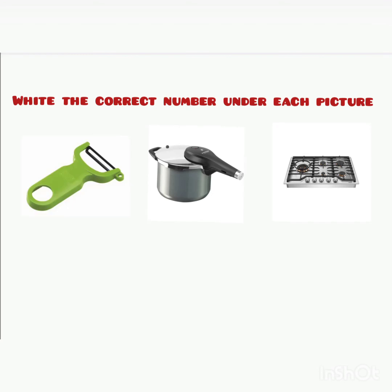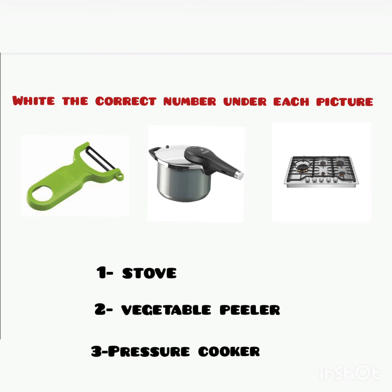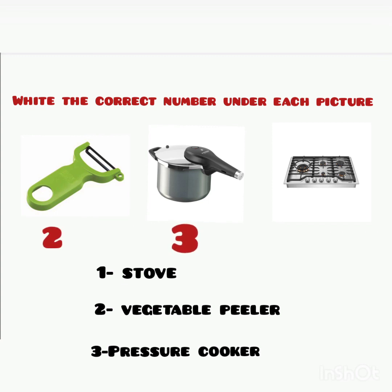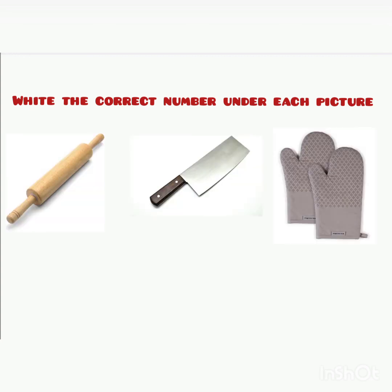تمرين رقم 2 — Exercise number 2. Write the correct number under each picture. إذن مطلوب هنا كتابة الرقم المناسب تحت كل صورة. Stove. Vegetable peeler. Pressure cook — فكروا قليلا. الصورة الأولى هي رقم 2. Vegetable peeler — الصورة الثانية رقم ثلاثة. Pressure cook — الصورة الثالثة رقم واحد. Stove. لاحظوا الصورة الثالثة — لدينا number 1.